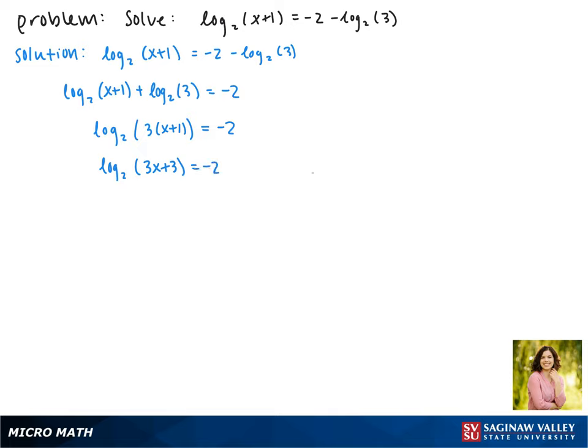Now to rewrite this we'll use the general principle of logarithms that log base b of x equals y can be rewritten as x equals b to the y. Doing this with our equation gives us 3x plus 3 equals 2 to the negative second power.